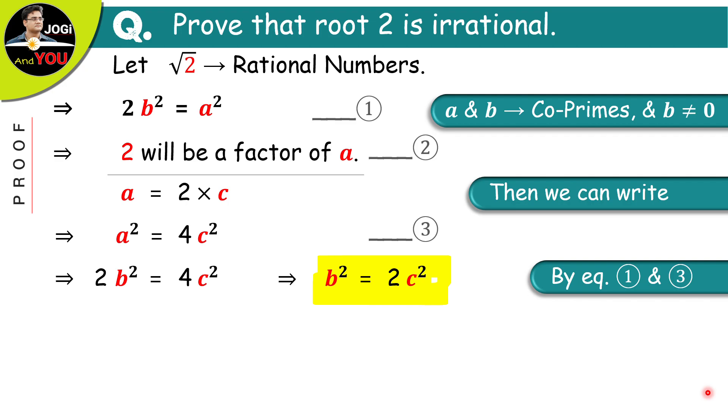We will also calculate its result in the same way as in equation number 1. So, here 2 divides 2c square then 2 divides b square and because 2 divides b square then 2 also divides b.